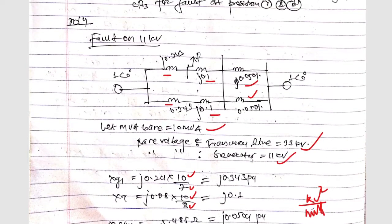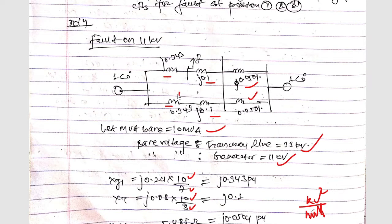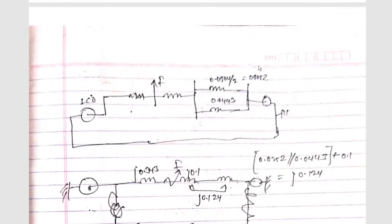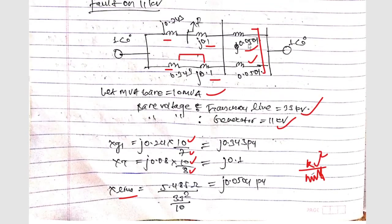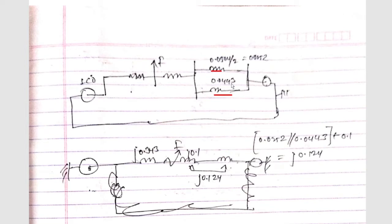Now we can see in the reactance diagram: the generator and transformer reactances are in series on each branch, and the two branches are in parallel. Further simplification shows that since the two line reactances are equal, their parallel combination is 0.0504 / 2 = 0.0252. The two series combinations of generator and transformer (0.343 + 0.1 = 0.443 each) are in parallel giving 0.0443. The fault has occurred here.